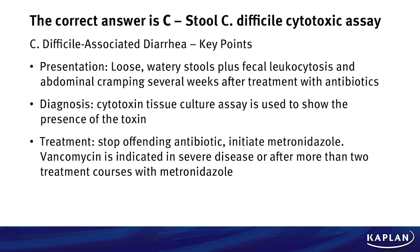How do we diagnose this patient? You take some stool and do a cytotoxin tissue culture assay. If it shows the toxin of C. diff, you've diagnosed it right there. What are we going to do for this patient? You can't just send her home. First, stop the offending antibiotic — which for her, she's already done with her course. Then initiate metronidazole; that's our primary treatment for C. diff-associated diarrhea. But if that doesn't work after a few courses, the next step is vancomycin. So the gold standard diagnosis is the stool cytotoxin assay, primary treatment is metronidazole, and next line down is vancomycin.